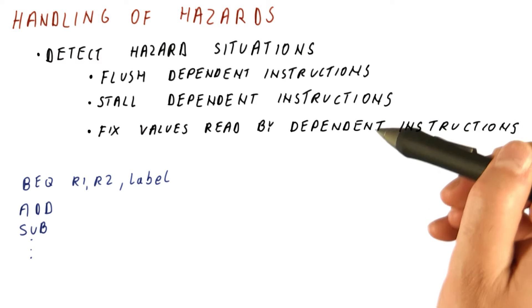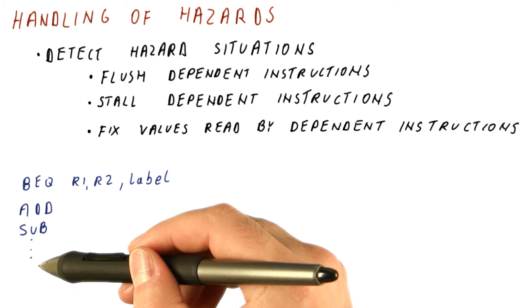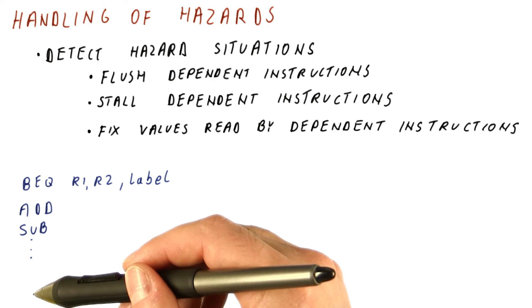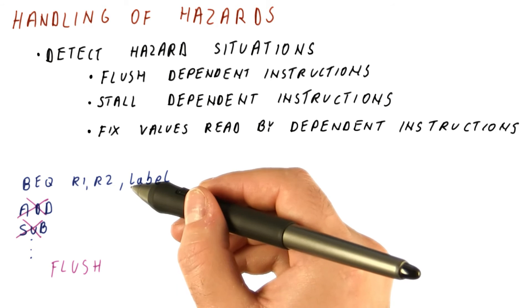Delaying them or trying to fix the values they are reading is not going to work. We have to delete these instructions from the pipeline and fetch the correct ones and then execute them from scratch. So we need to flush the dependent instructions on a control dependence.